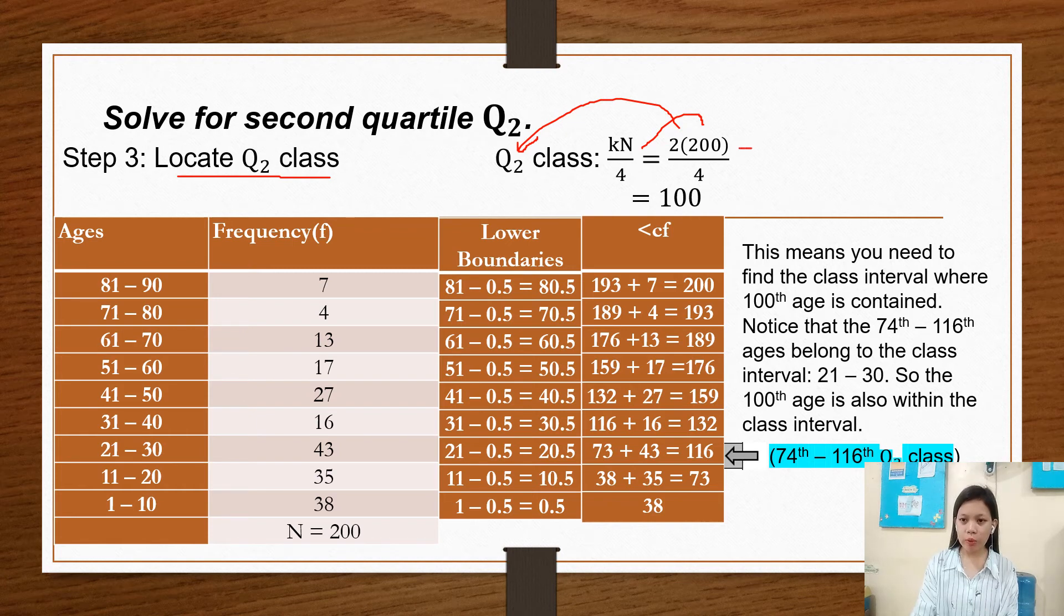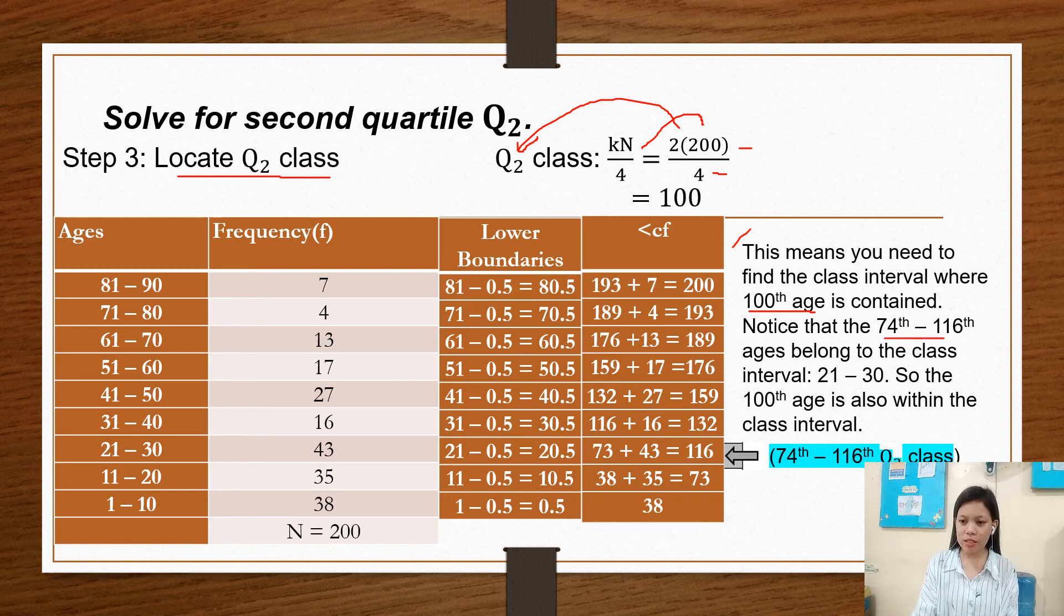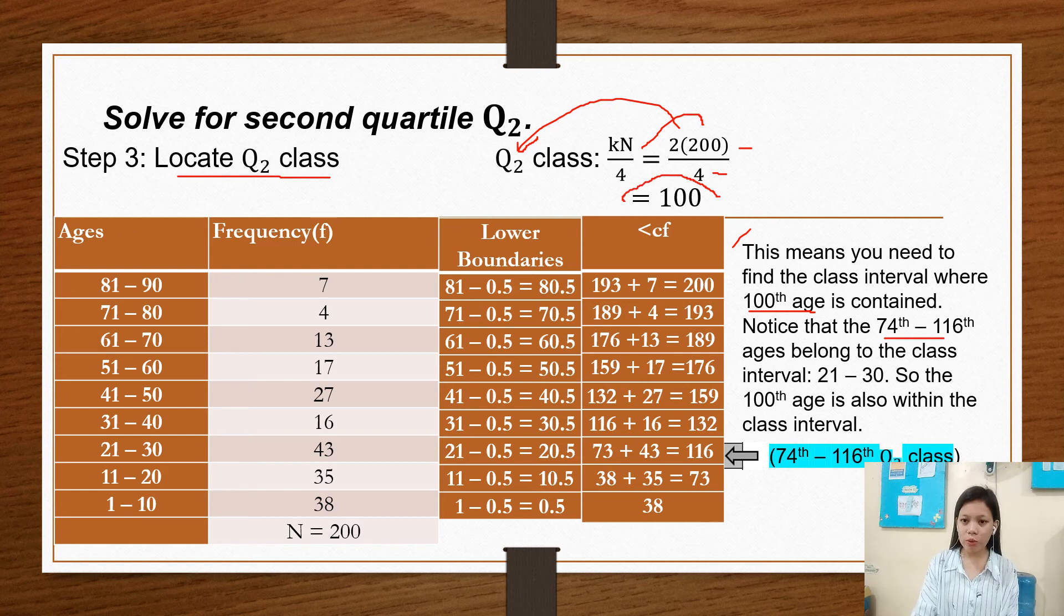So 2 times 200 is 400 divided by 4 is 100. So this means you need to find the class interval where 100 age is contained. Notice that the 74 to 116 ages belong to the class interval 21 to 30. So the 100 age is also within the class interval. So since our Q sub 2 class is 100 and 100 is in between 74 to 116, so that is our Q sub 2 class.